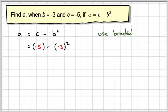So it's a very good idea to use brackets here. Minus 5 is minus 5 minus, then minus 3 squared is 9. So we've got minus 5 take away 9.